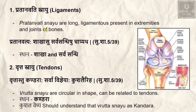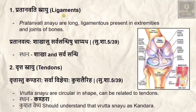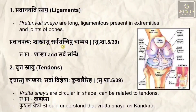The types of snayu are divided into four based on their structure and shape. The first is pratanavati snayu, which can be correlated with ligaments. Pratanavati snayu are long, ligamentous structures present in the extremities and joints. The sloka states: pratanavatyah shakhasu sarvasandhesu — pratanavati snayu are present in the shakha (extremities) and sarvasandhi (all joints of bone).